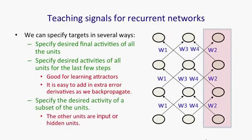Or we could specify the desired activity of a subset of units which we might think of as output units. And that's a very natural way to train a recurrent neural network that is meant to be providing continuous output.